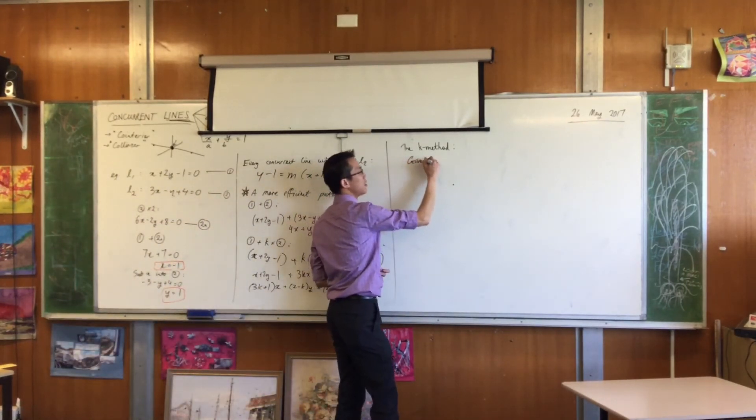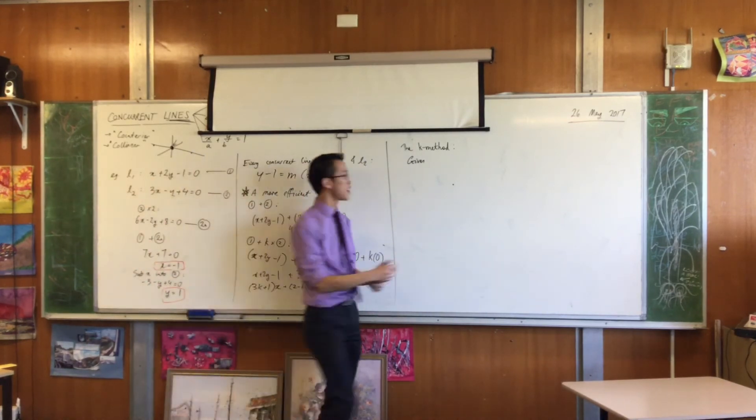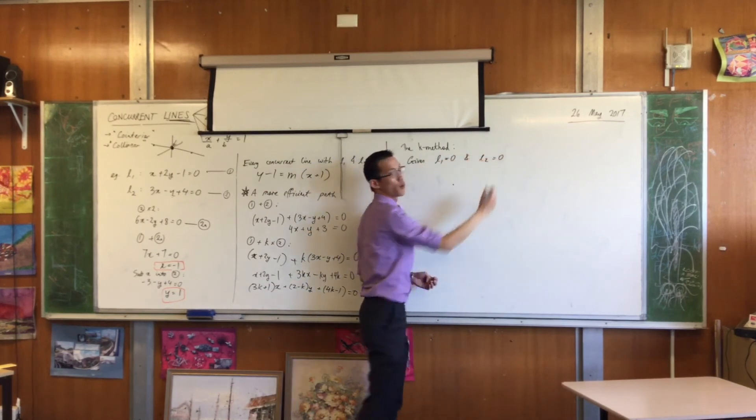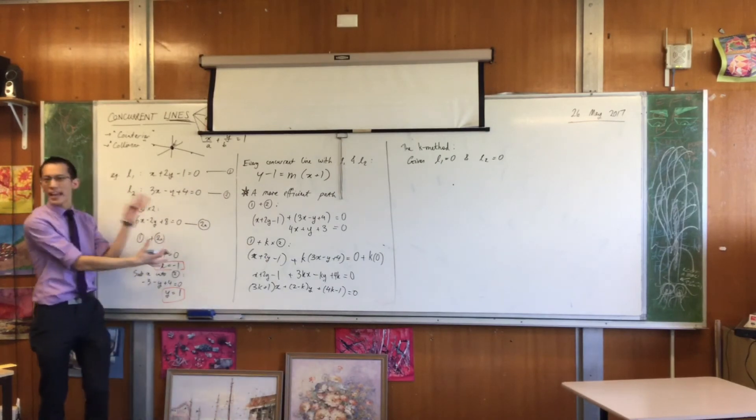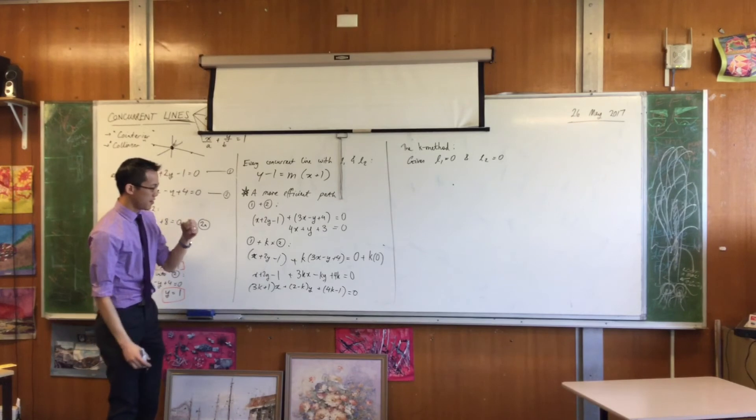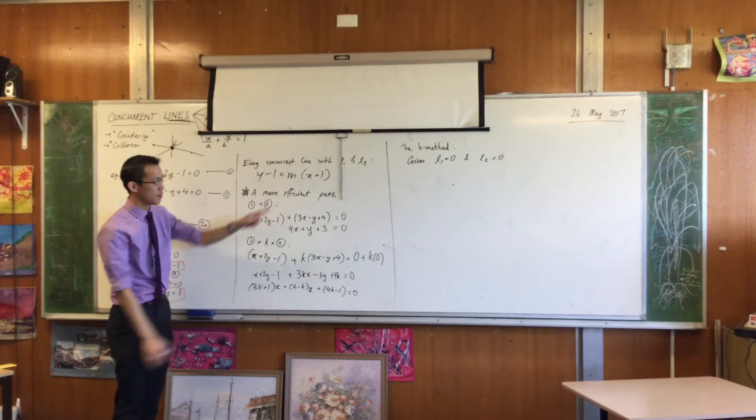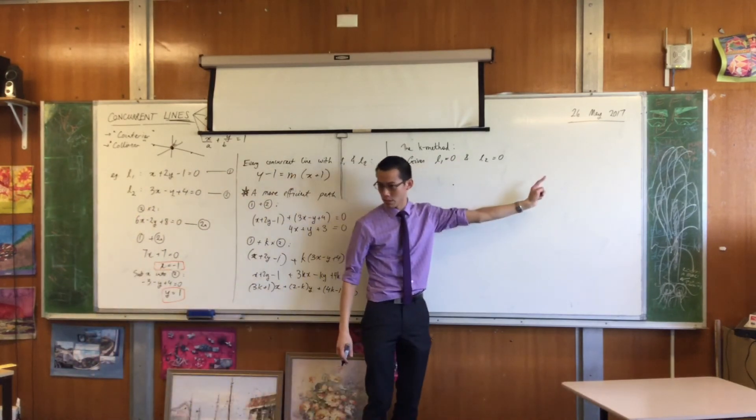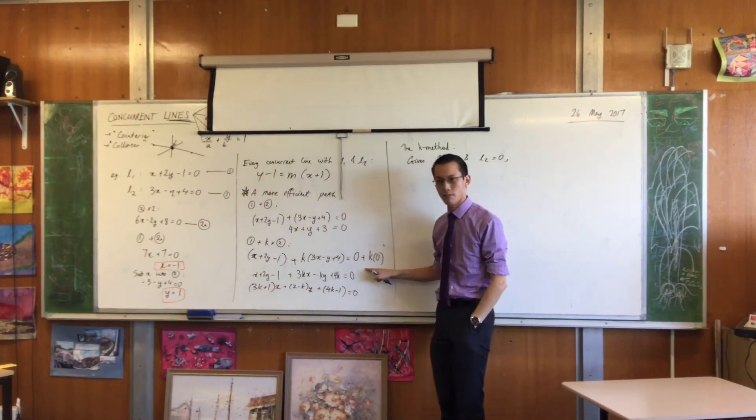If you have two lines in general form. Right? So, in this format here. Let's write it like this. Given this line and this line both equal to zero. I can avoid working out the point of intersection. I can go straight to my new line doing this. See this here? So, let's state this simultaneous equations step with algebra. Right? Given L1 equals zero and L2 equals zero.